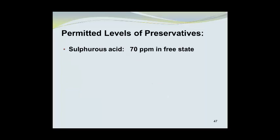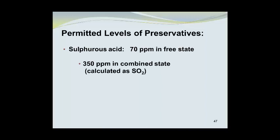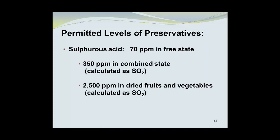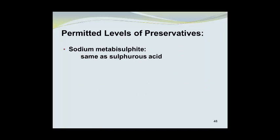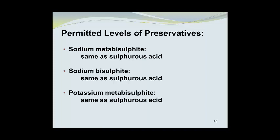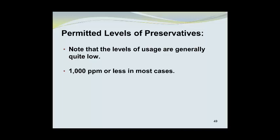When using sulfurous acid, you are limited to 70 ppm in its free state and 350 ppm in a combined state, calculated as the equivalent to sulfur dioxide, or SO2. 2,500 ppm are permitted in dried fruits and vegetables, also calculated as SO2. Sodium metabisulfite, sodium bisulfite, and potassium metabisulfite follow the same rules as sulfurous acid. Note that the levels of usage are generally quite low.